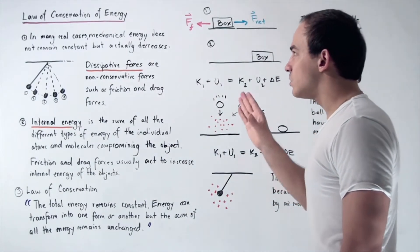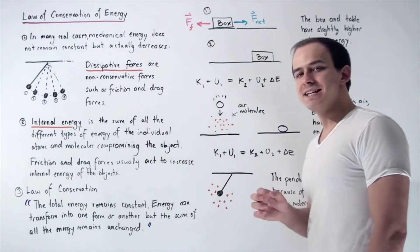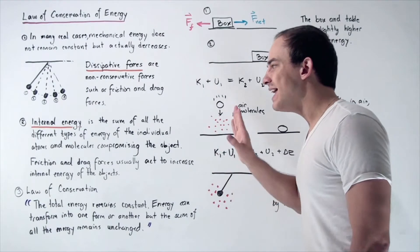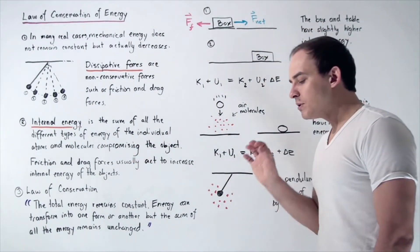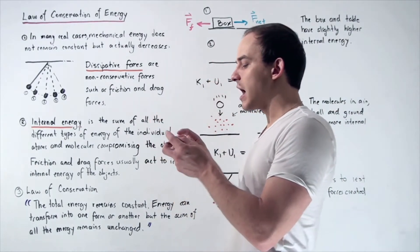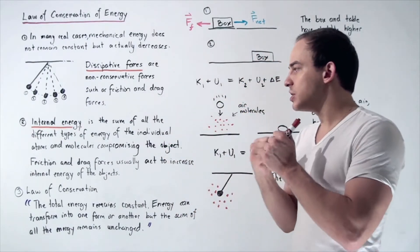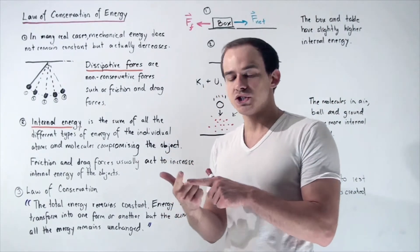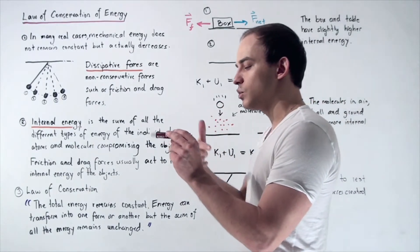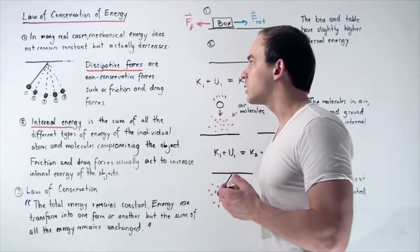Before we discuss the law of conservation of energy, let's talk about internal energy. Internal energy is the sum of all the different types of energy of the individual atoms and molecules comprising our object. For example, if I examine this object on a sub-microscopic level, I'm going to see vibrating molecules and atoms. The vibrational energies, the kinetic energies, potential energies, and every other type of energy — if I sum up that energy of the individual molecules and atoms comprising this marker — that will give me the internal energy of my marker.